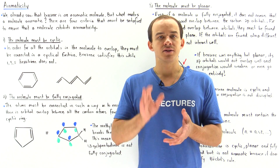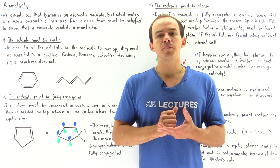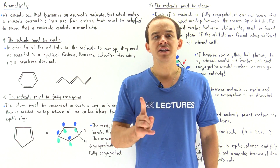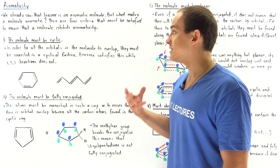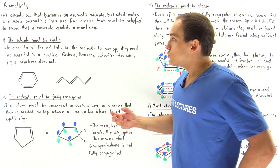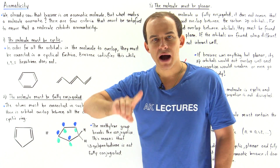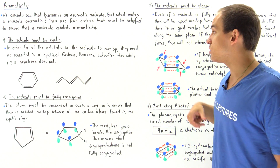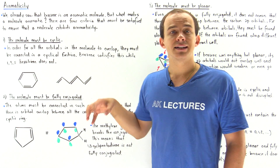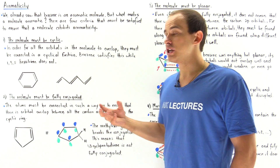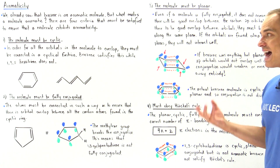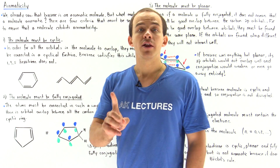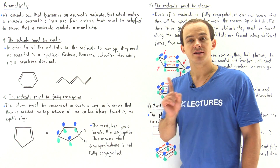We're going to discuss the four criteria that must be satisfied for a compound to be aromatic. Criteria number one states that our molecule must be a cyclic molecule — it must contain a ring. In order for all the orbitals in the molecule to actually overlap and interact with one another, they must be connected in a cyclical fashion, in a ring structure. Benzene satisfies this criterion, unlike 1,3,5-hexatriene, which does not.